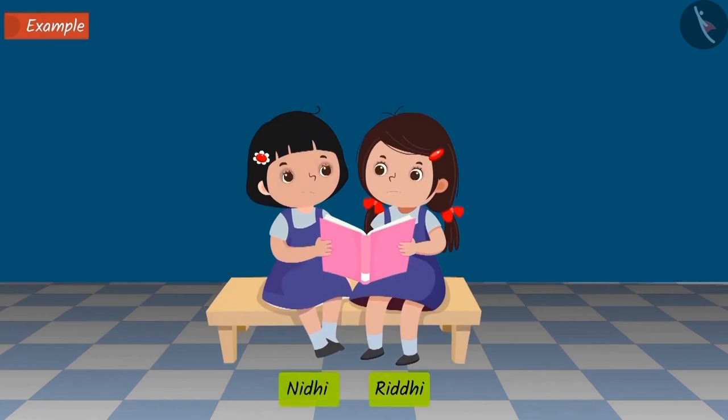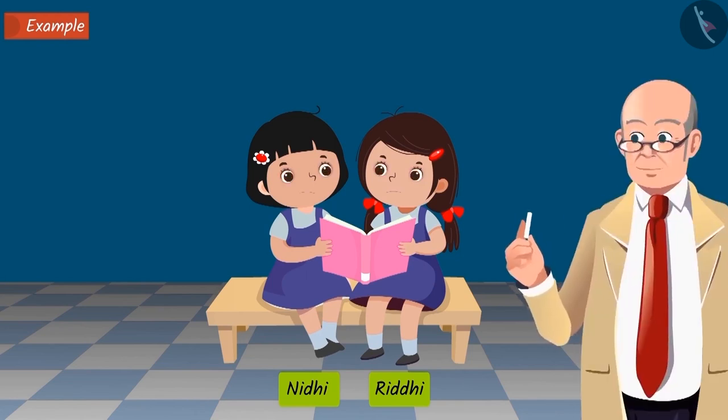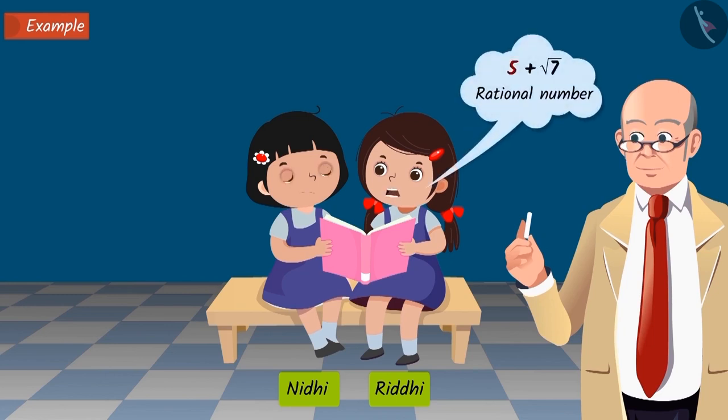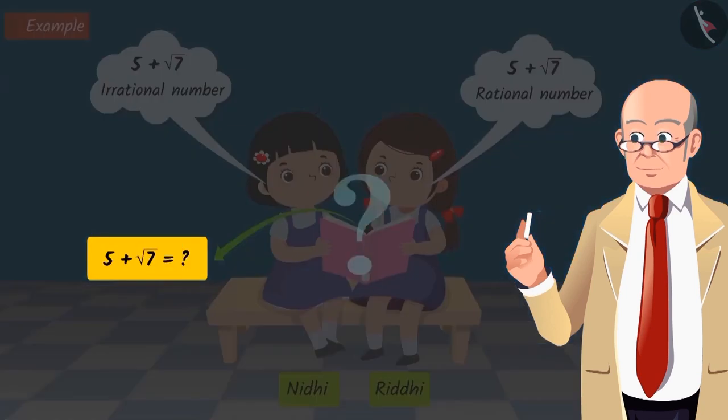Riddhi and Nidhi were discussing something between themselves in the class. When the teacher came and asked them what they were discussing, Riddhi states that 5 plus square root 7 is a rational number, while Nidhi says that it is an irrational number. The teacher asks them to explain why 5 plus square root of 7 should be a rational number or why it should be an irrational number.